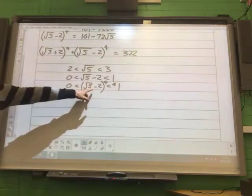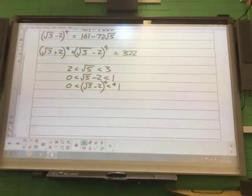So root 5 take away 2, not root 5 plus 2. So root 5 take away 2, which is between 0 and 1, therefore root 5 take away 2 all to the power of 4, is between 0 and 1.